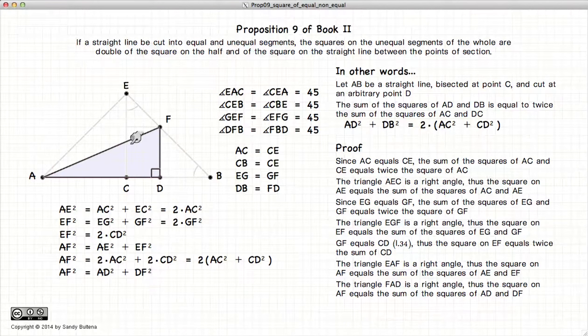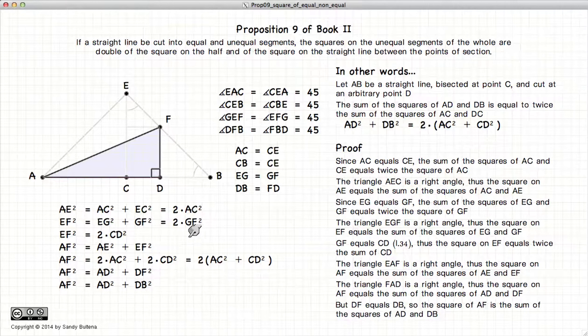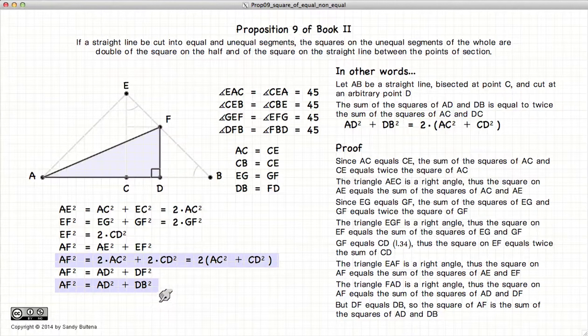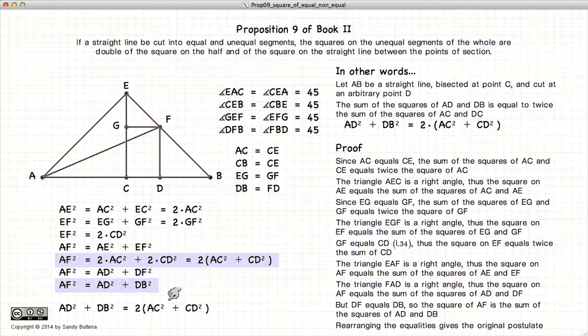If we look at this triangle now, we have AF squared is equal to FD squared plus AD squared. AF squared equals AD squared plus DF squared. And we know that FD is equal to DB, so AF squared equals AD squared plus DB squared. But we've already established that it is also equal to this, putting those two equalities together. And we end up that AD squared plus DB squared equals twice AC squared plus CD squared.